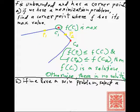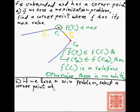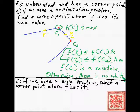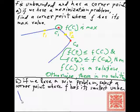If we have a minimization problem, we need to find a corner point where f has its minimum value, then choose arbitrary points on the lines that meet at that corner point. By symmetry, if the values of the objective function at those arbitrarily chosen points are greater than or equal to the value at the corner point, then we have a solution. Otherwise, if that condition is not met, there is no solution.